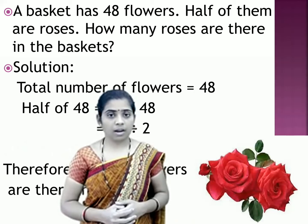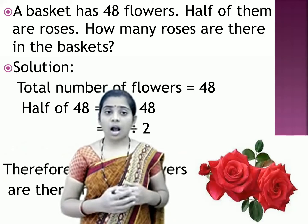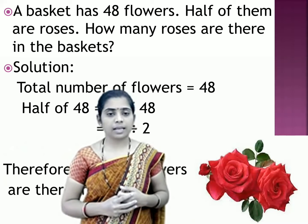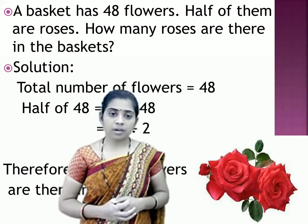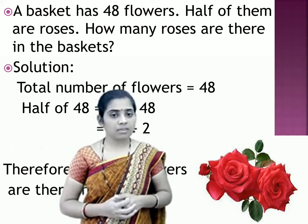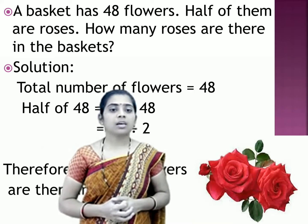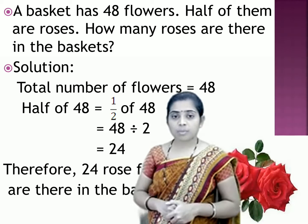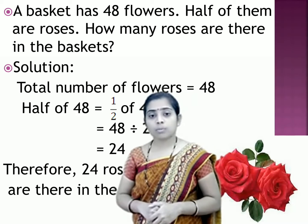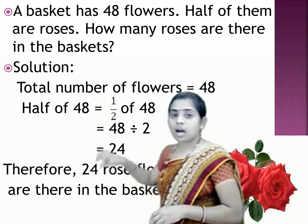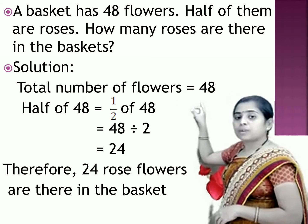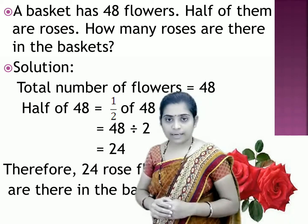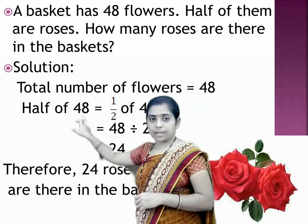First example: a basket has 48 flowers. Half of them are roses. How many roses are there in the basket? Any word problem always begins with the given things. There are 48 flowers in the basket, meaning the total number of flowers is 48. We need to find out half of 48.